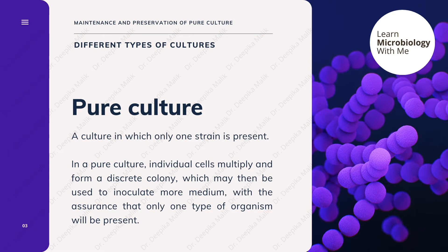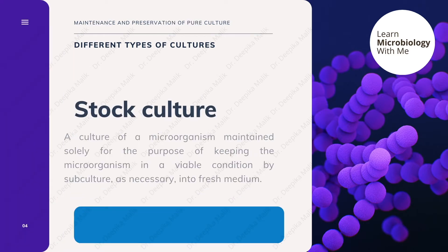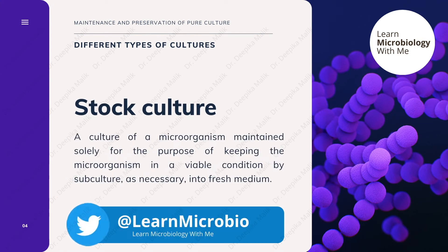A pure culture is basically a culture in which only one strain is present. In microbiological cultures we can have more than one strain, but in a pure culture only one type of strain should be present in the culture medium. Here we allow the pure culture to multiply and form a discrete colony on the plate, which may then be used to inoculate more medium with the assurance that only one type of organism will be present.